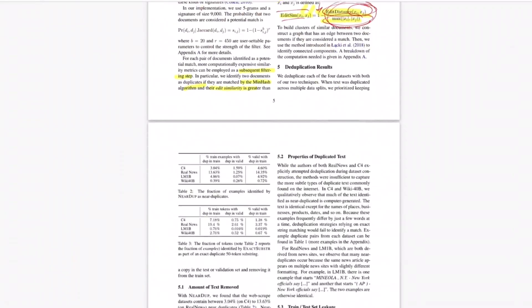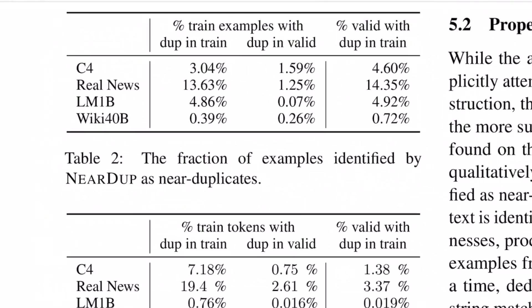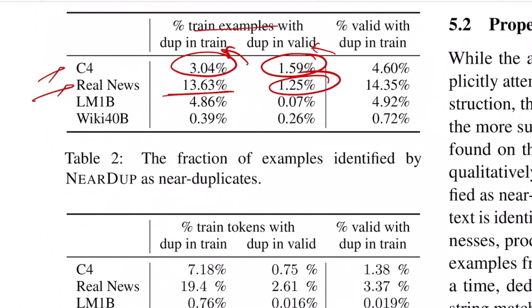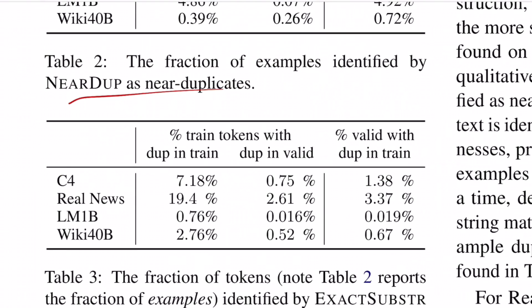Looking at results for the C4 corpus, 3% of training examples were duplicate within the training data itself, and roughly 1.5% were duplicate with the validation set. For RealNews, 13% was duplicate within training, and 1.25% was duplicate with the validation set. Looking at exact substrings, duplication goes as high as 19%, which is a pretty significant number.